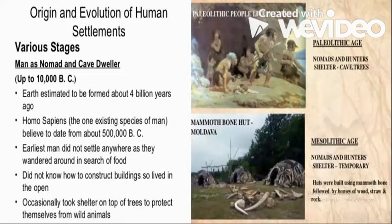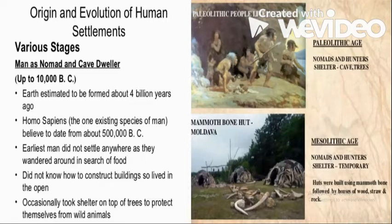First we have to see man as a nomad. At first there was no rural settlement and obviously no urban settlement. Man was just a nomad — he used to roam here and there. He was a hunter-gatherer, as visible in the right panel, up to 10,000 BC. At that time, the human being known as Homo sapiens lived in the open, later on treetops or in caves to protect himself.